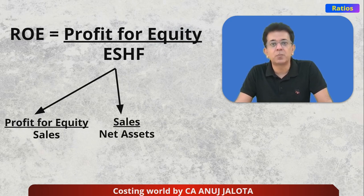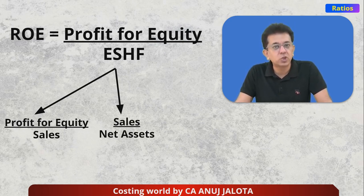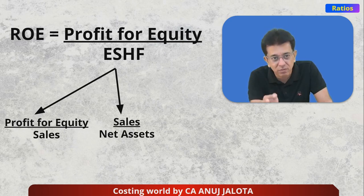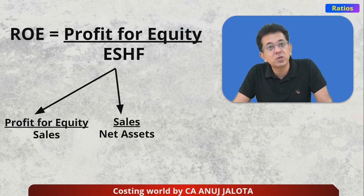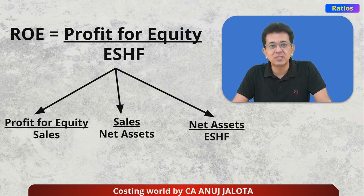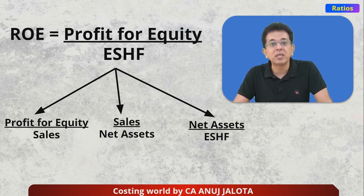The second part is sales upon net assets, also called the Asset Turnover Ratio — how many rupees of sales you are getting for every rupee invested. The third part is the Equity Multiplier, which is net assets upon equity shareholders' funds.